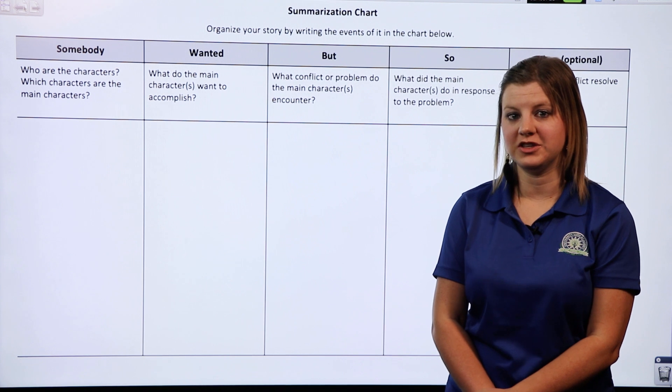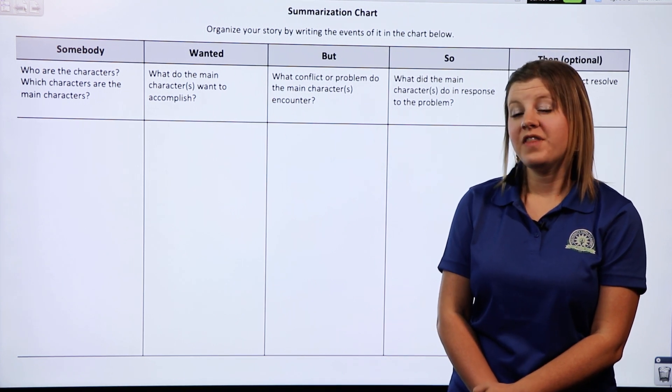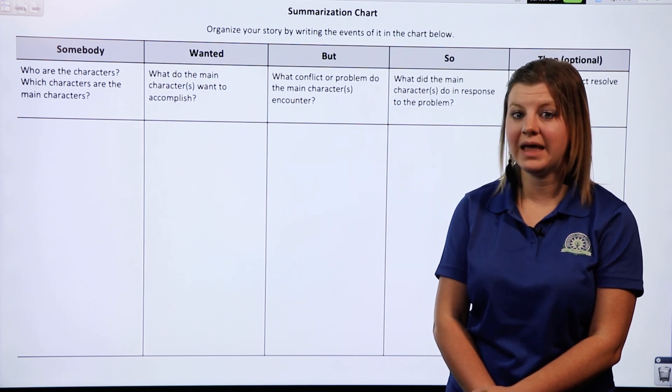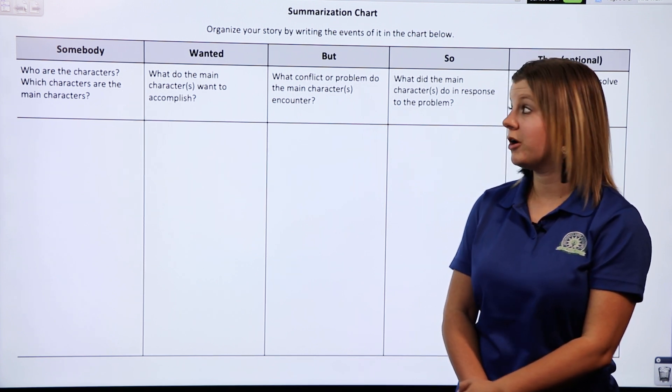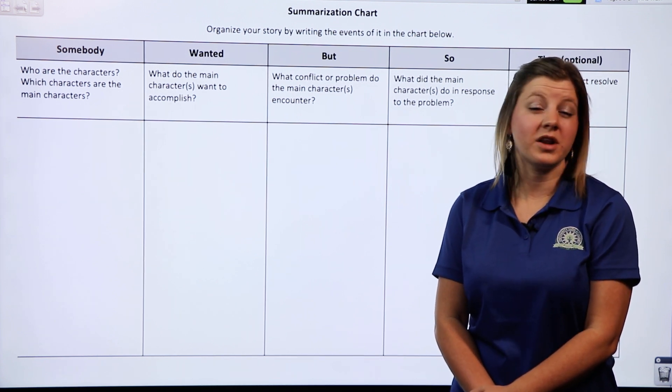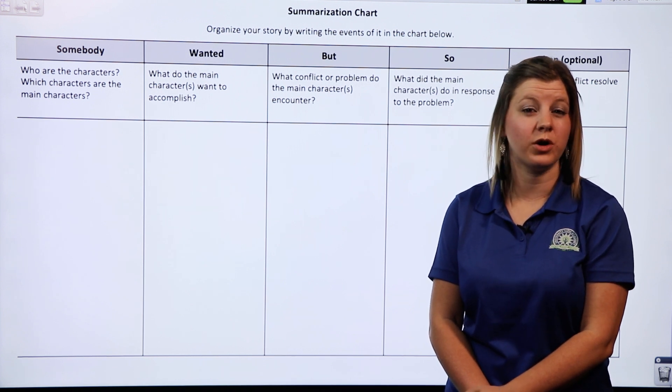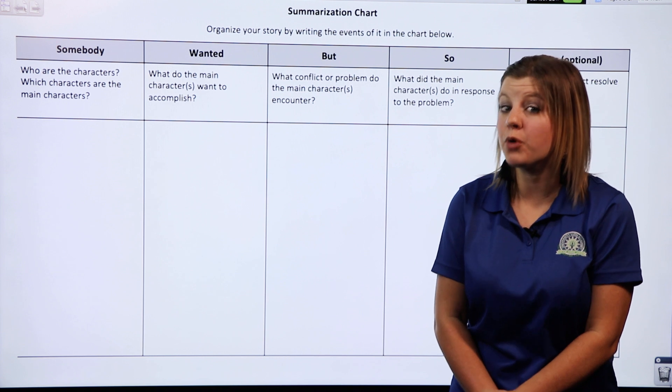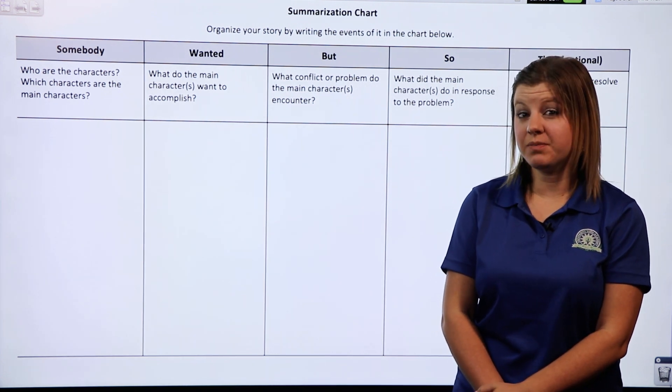So let's take a look at the first part of this chart: Somebody. That's where you can think about who are the characters, and more importantly, who are the main characters. The next part, Wanted, well what are the main characters want to do? What do they want to accomplish? But, hmm, what problem do they face? Is there something that's stopping them from doing what they want to do?